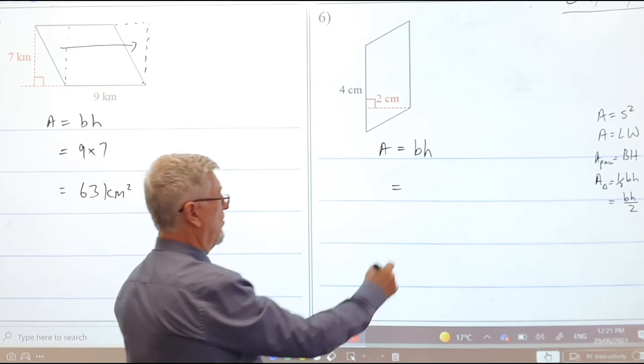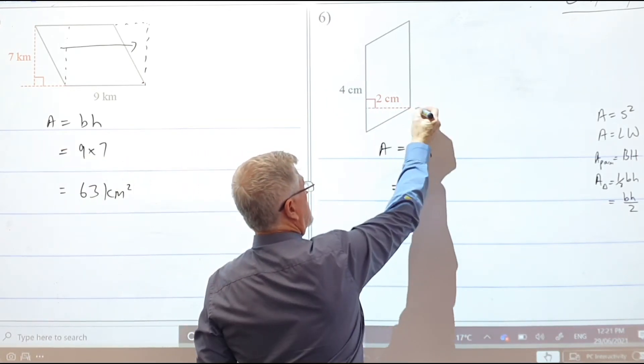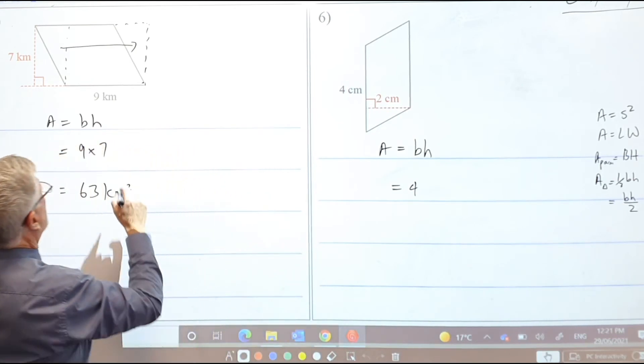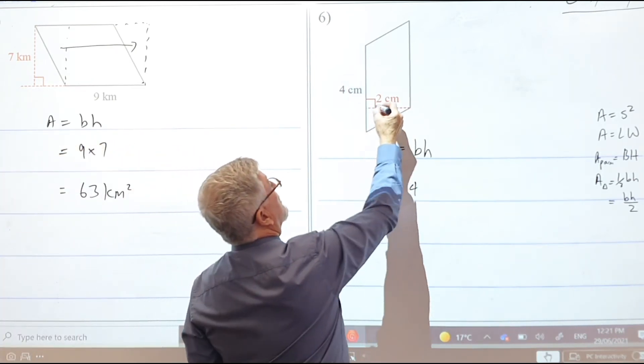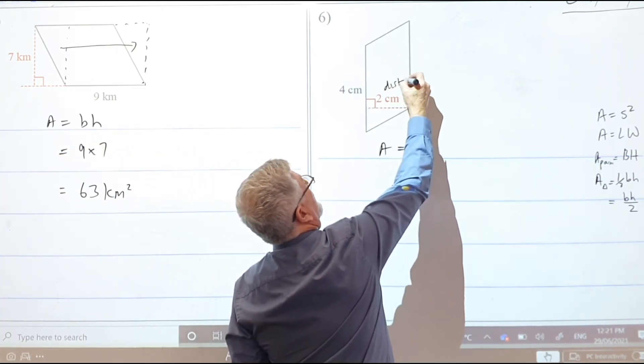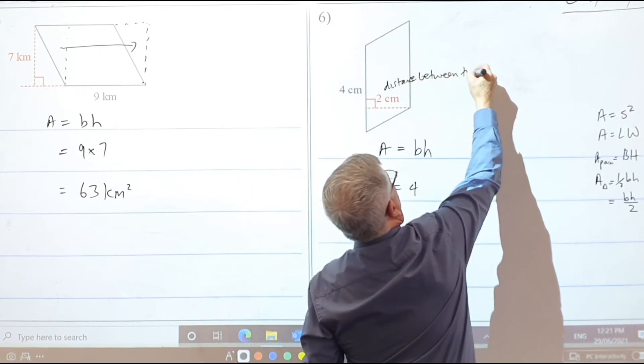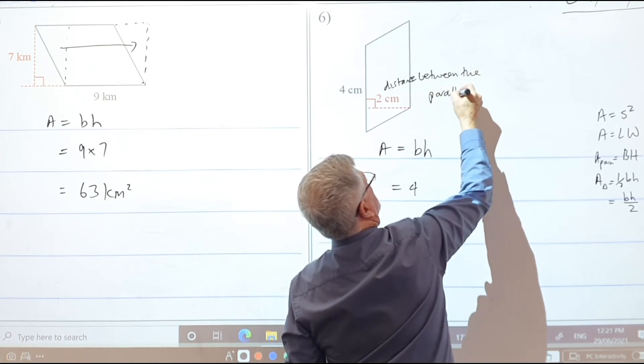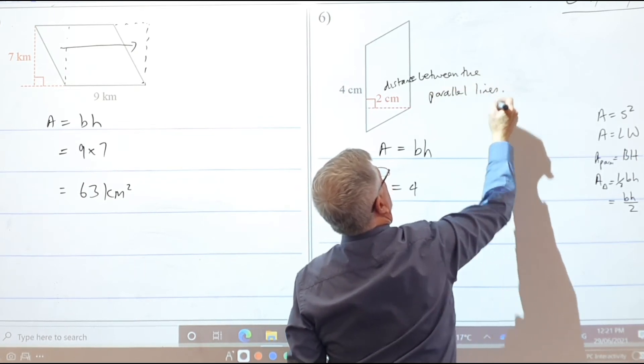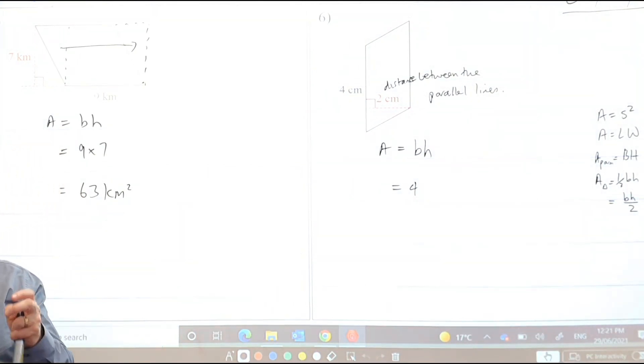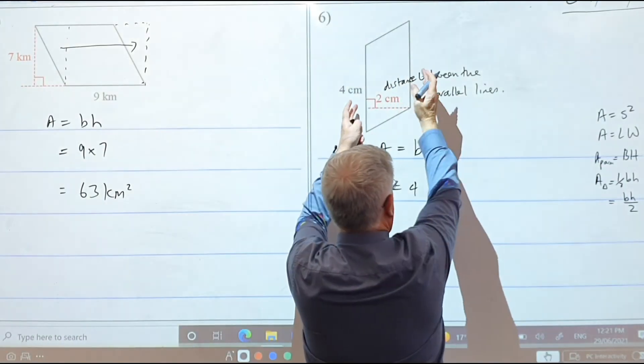Four. And the height is the distance between the parallel lines. And we don't always explain that. The height is the distance between the parallel lines. Are you OK with why it's called a parallelogram? Everything's parallel. That pair's parallel and that pair's parallel.